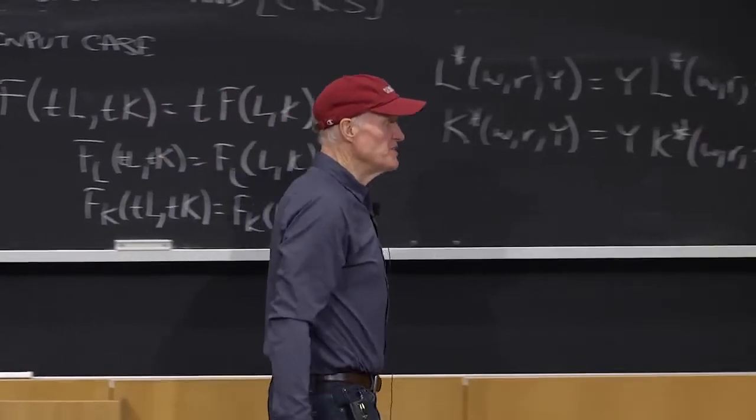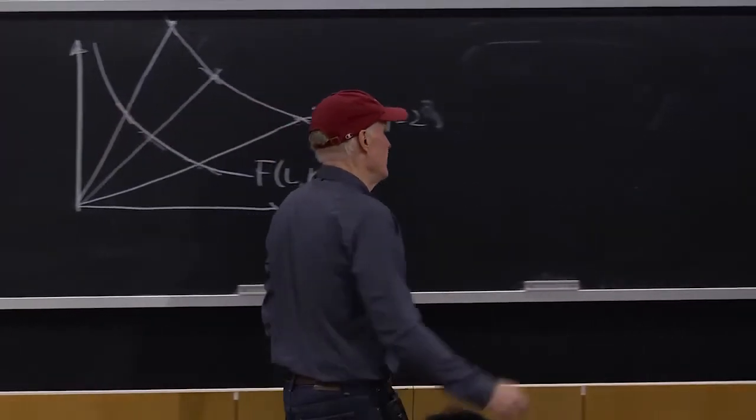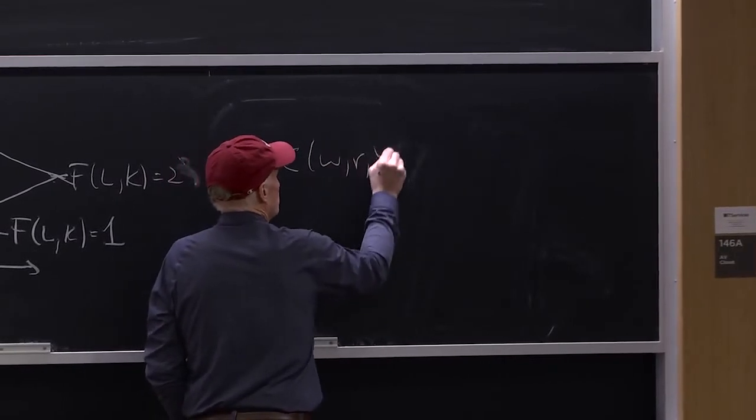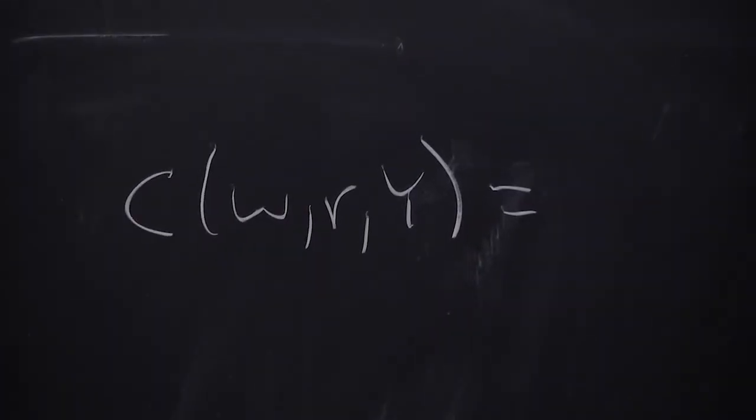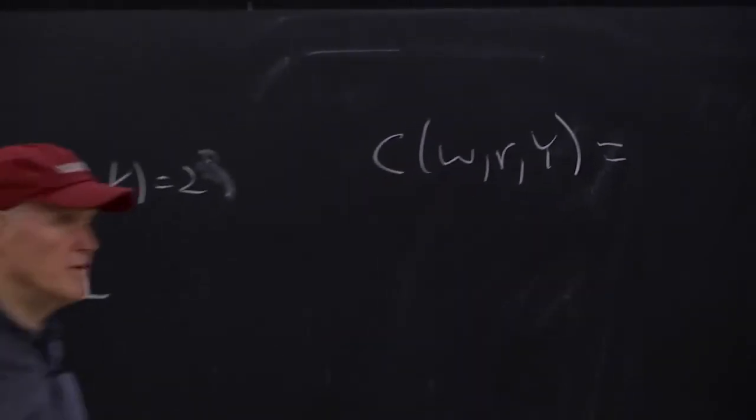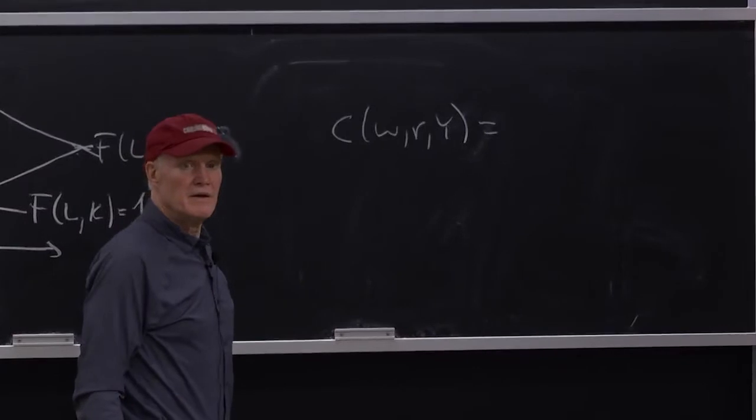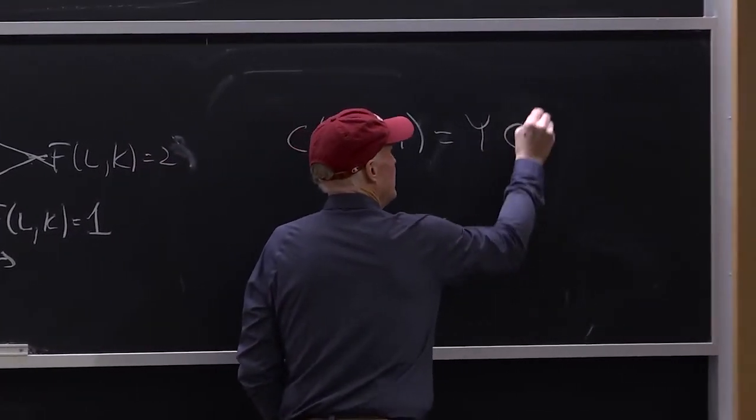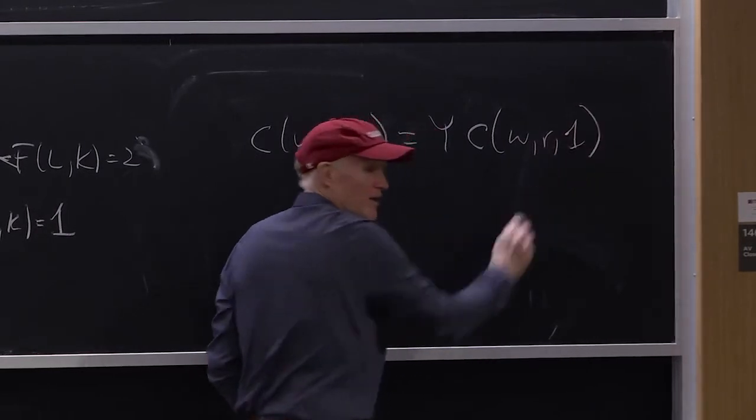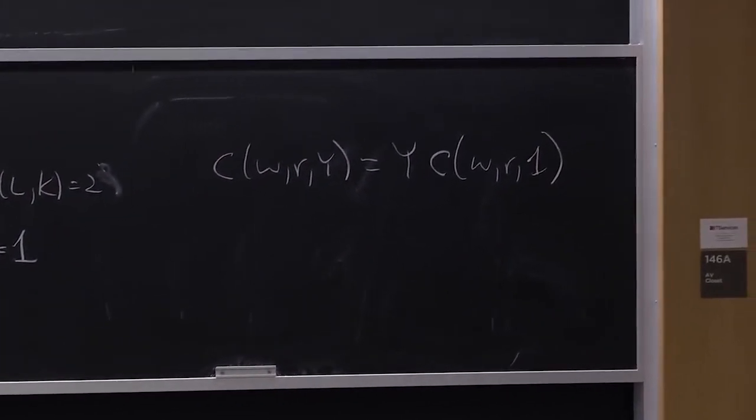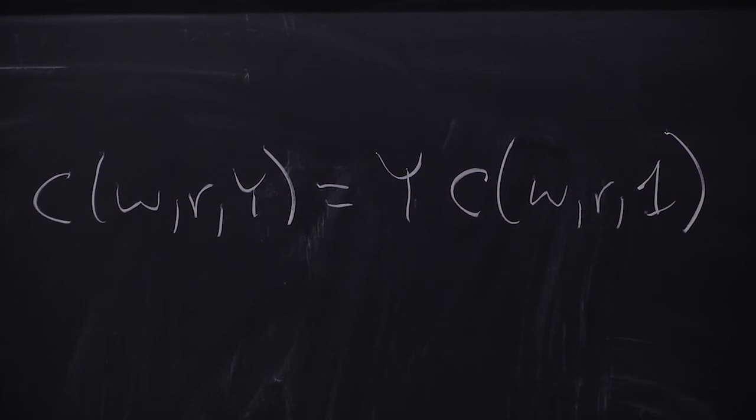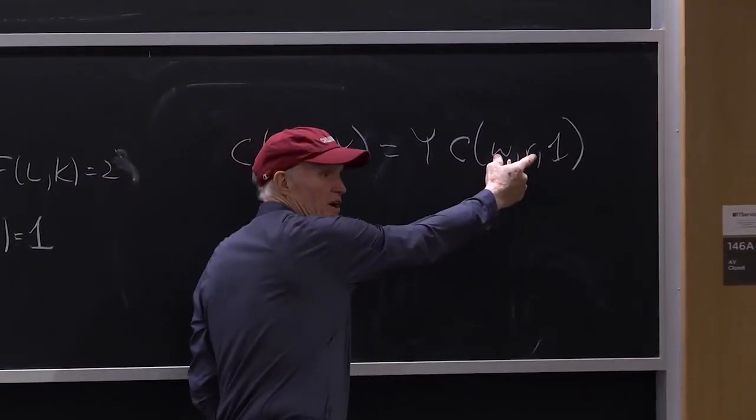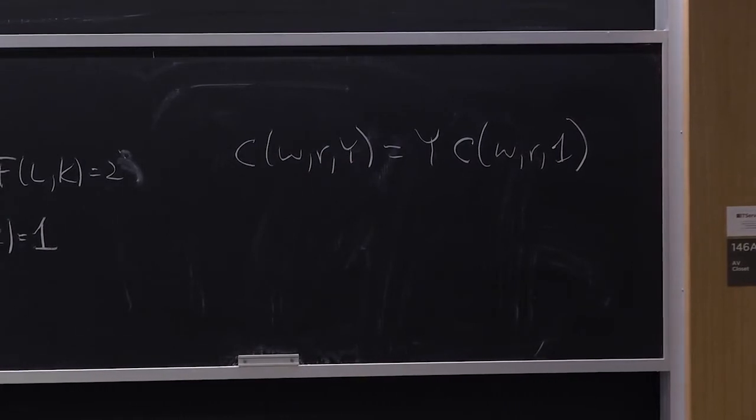In terms of the cost function, what does the cost function with constant returns to scale look like? C of W, R, and Y. What does it look like? How can you look at a cost function and say, oh, constant returns to scale? What will it always look like? How about this? Y times C of W, R, and 1. It will always look like that. It will always be Y times something that depends on W and R. Where this is the unit cost function. That's what it costs to produce one unit of output.